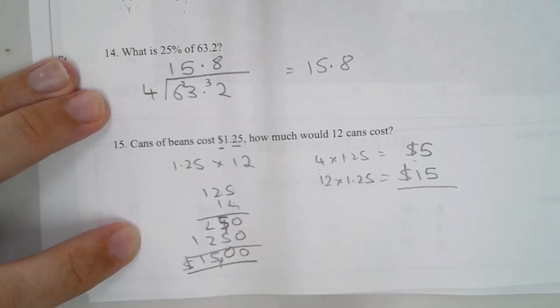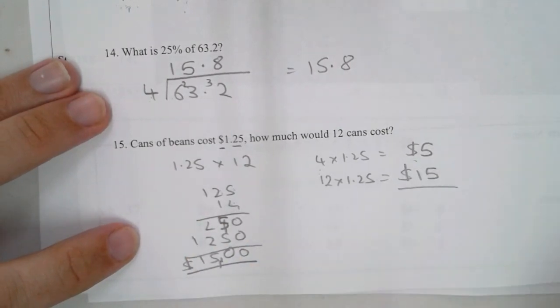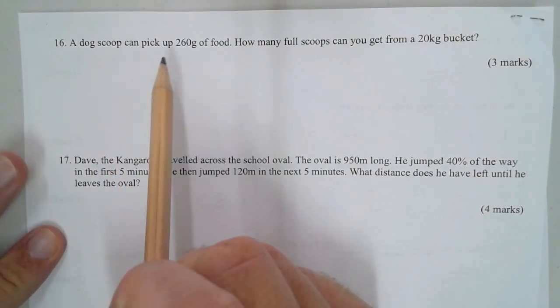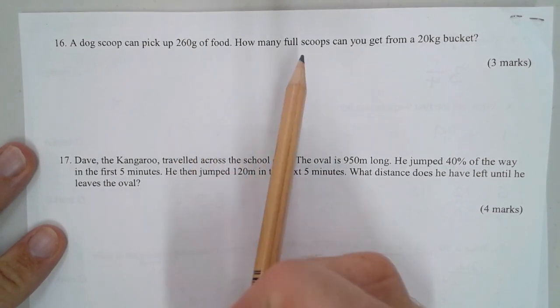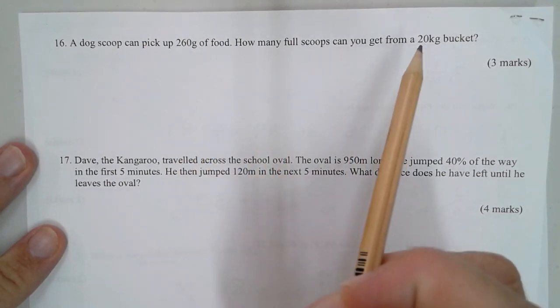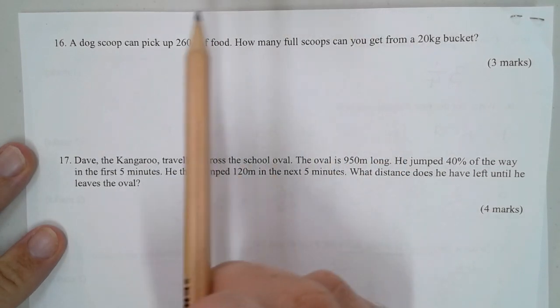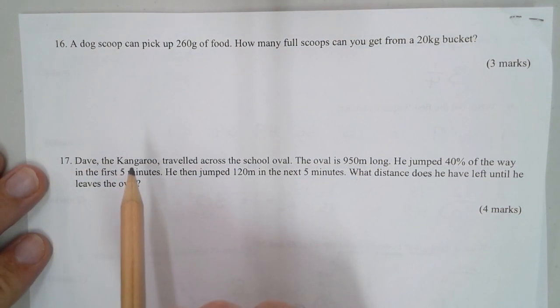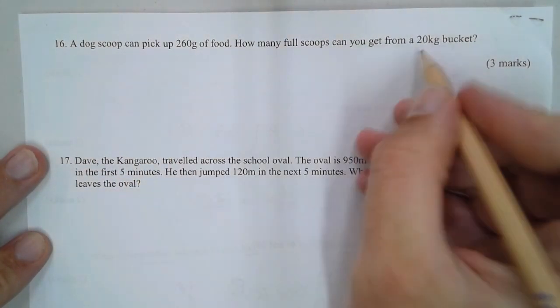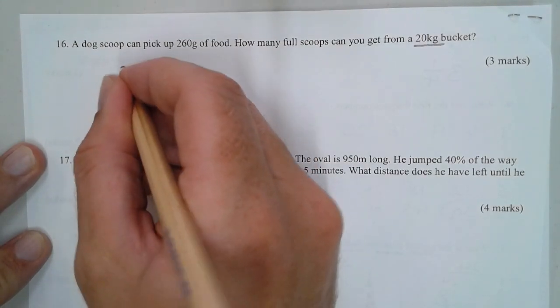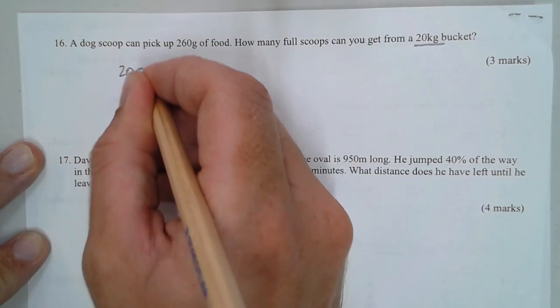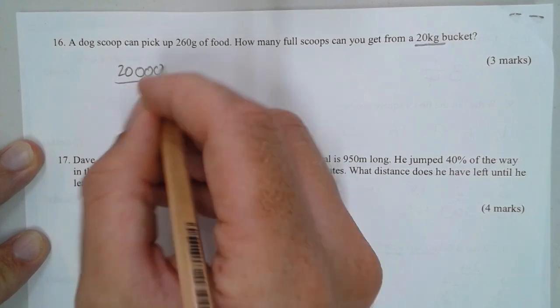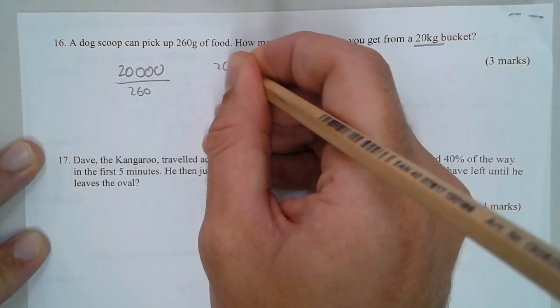Number 16: a dog scoop can pick up 260 grams of food. How many full scoops can you get from a 20 kilogram bucket? We're trying to see how many of these can go into that, or that divided by that. First of all, let's convert this into grams. One kilogram is a thousand, so really it's 20,000 over 260.